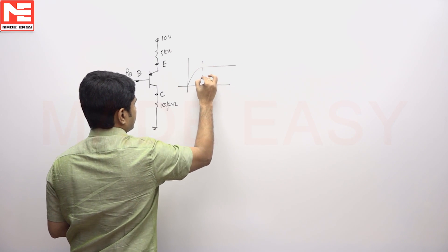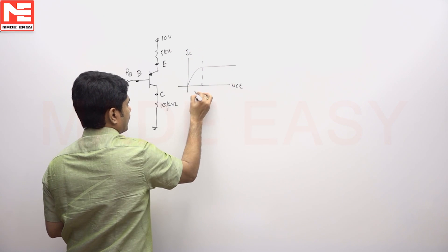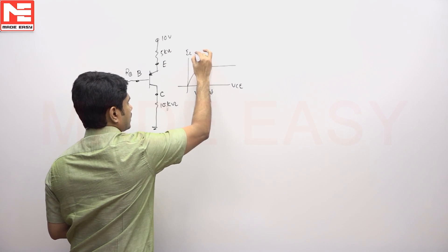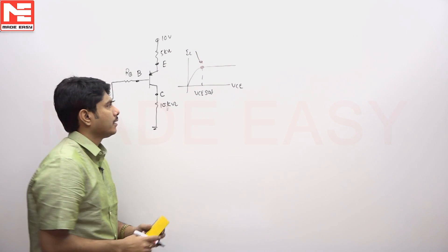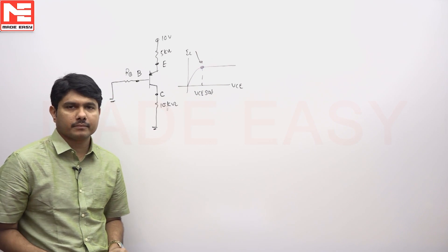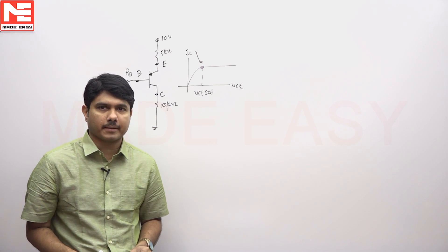So according to the graph this is VCE versus IC. VCE sat will be here just to find out this design. At this point RB design if you can do it according to that we will set the RB value so that it will be in active region all the times.